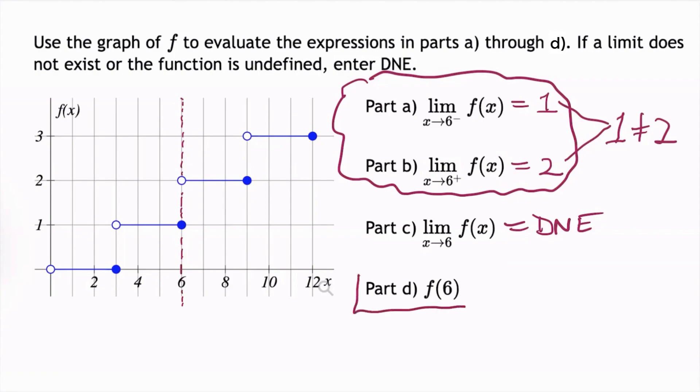And finally, in part d, we need to find f(6). So we go over to the graph, we look where x is 6. If we look at this open circle, the function is not defined at that point. However, at this closed circle, the function is defined.